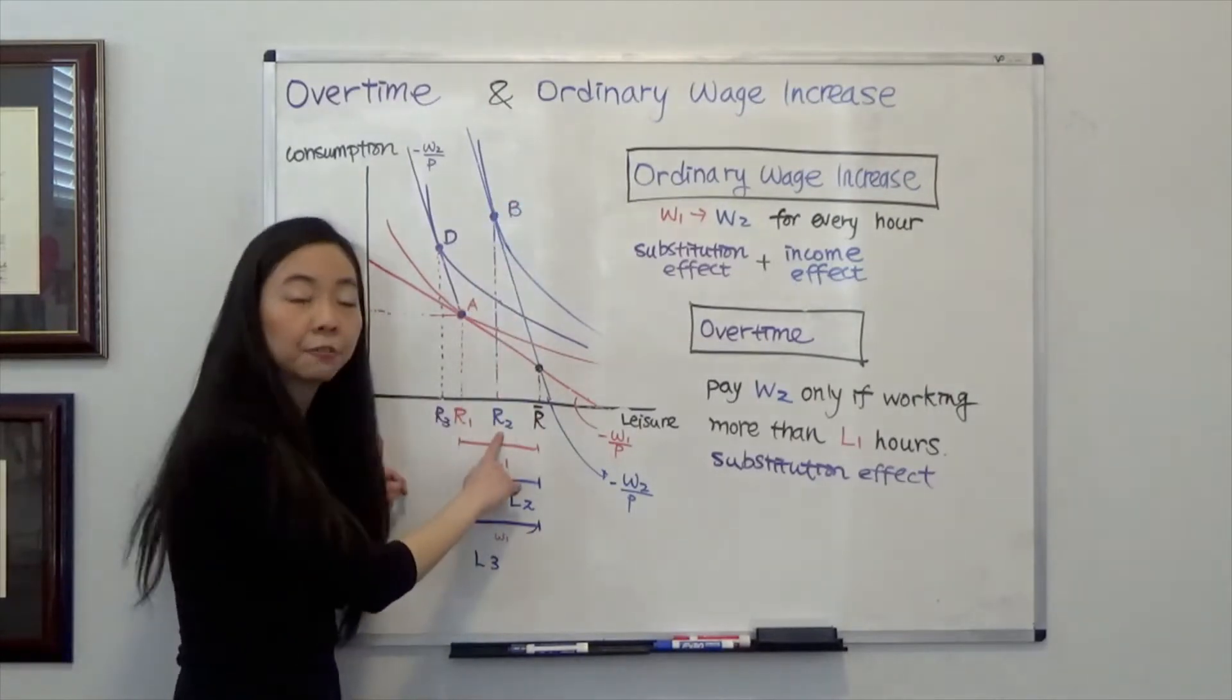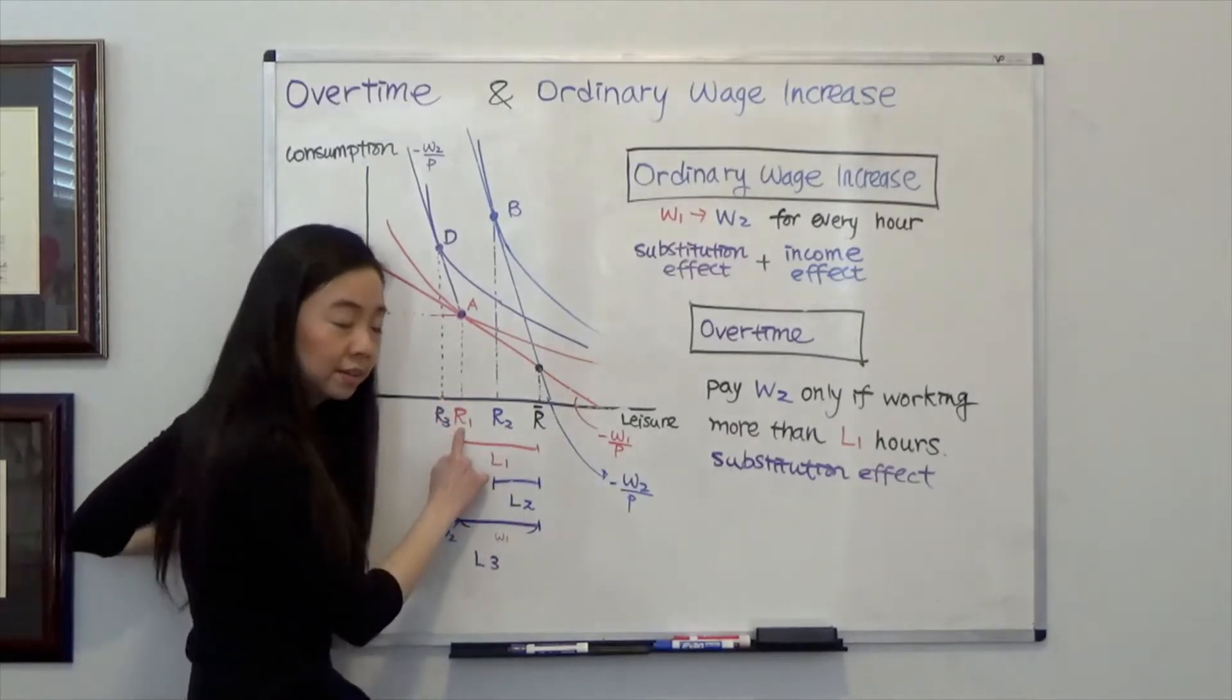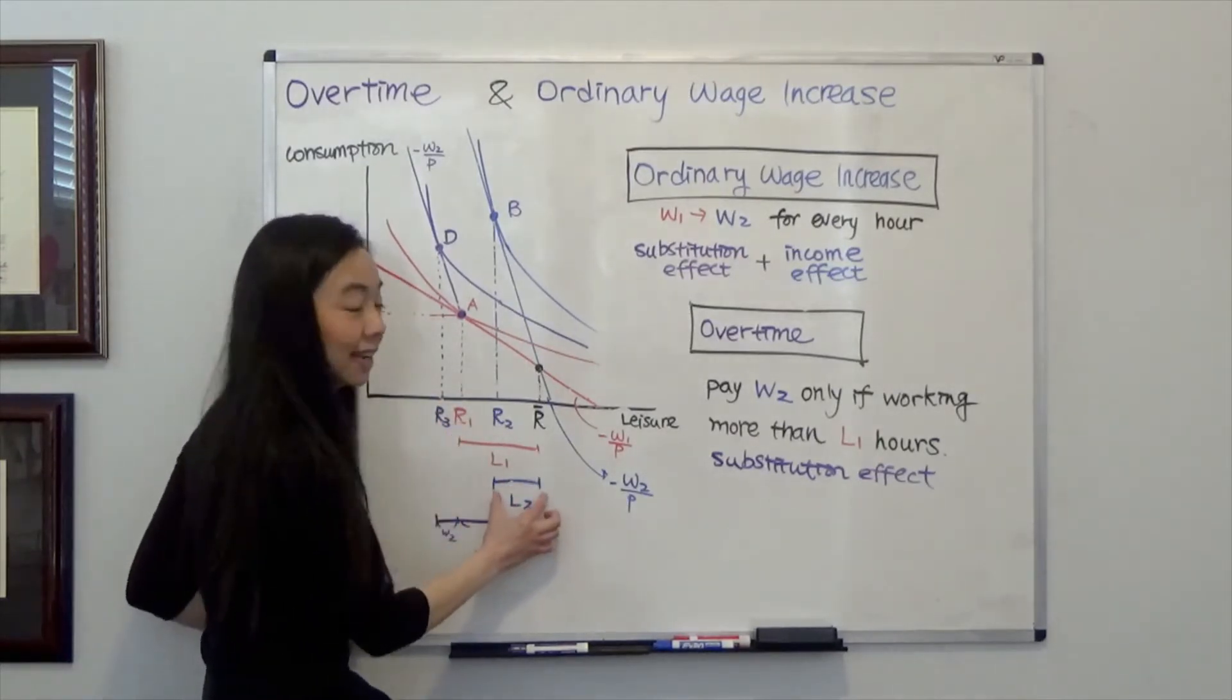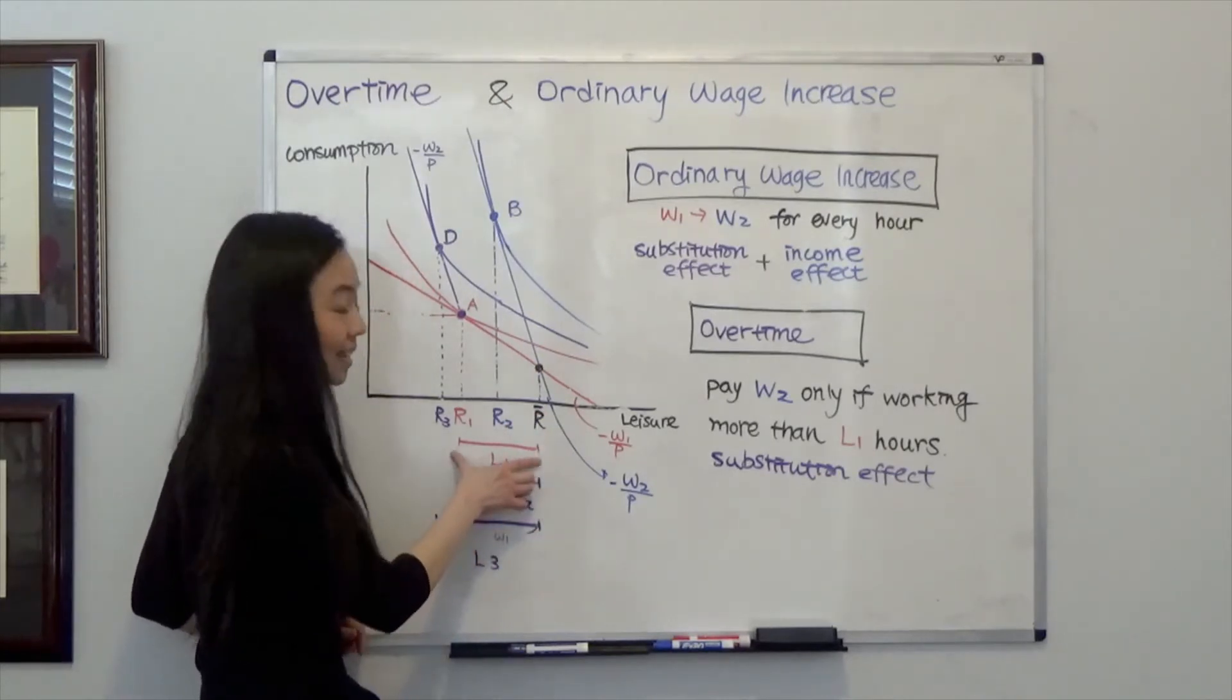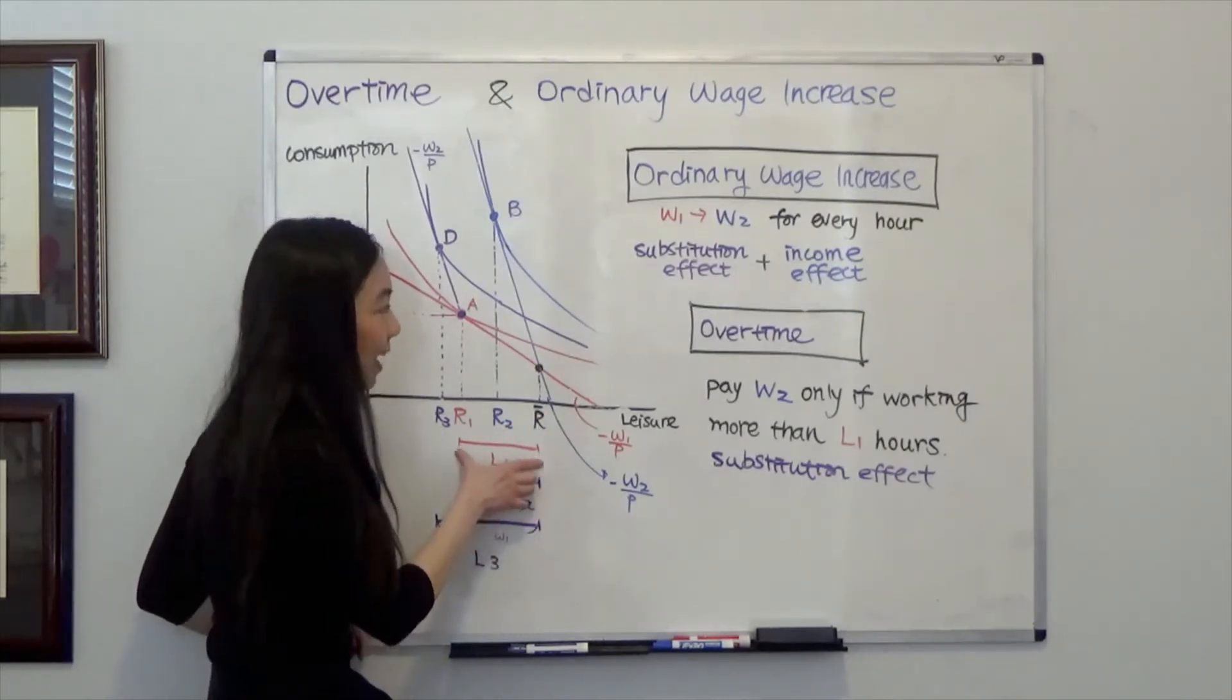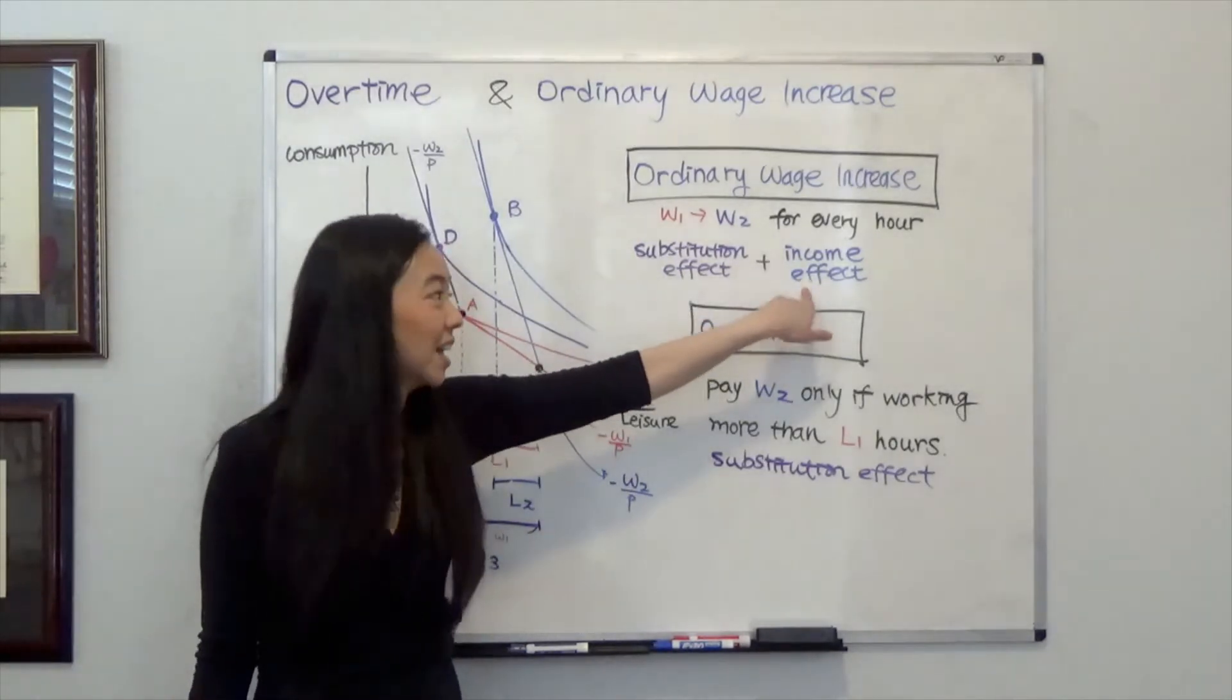And I am going to choose to consume at point B. That means I have R2 leisure hours. And R2 leisure hours is higher than R1. That means I end up working less. My work hour is L2. L2 is less than L1. So I end up working less. Because my wage increase is so big, the income effect dominates.